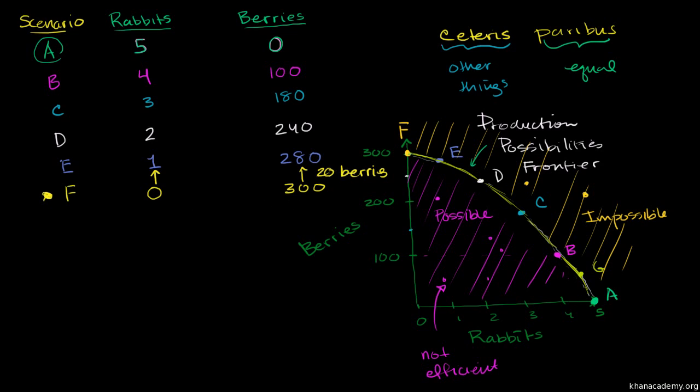Now, let's keep going. What happens if I'm in Scenario E? I'm already on average eating one rabbit or finding one rabbit a day, and I want to go to two rabbits a day. What am I going to give up? Well, now I am going to give up 40 berries. This is interesting.